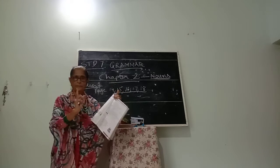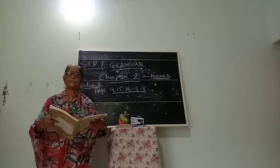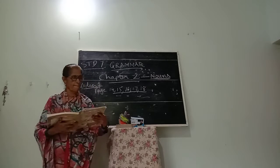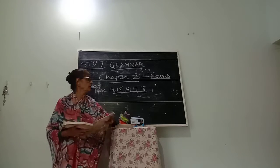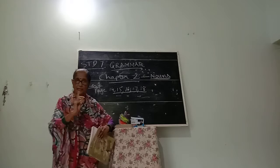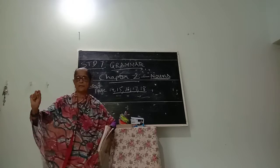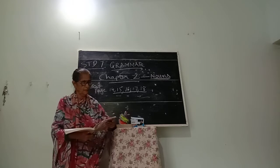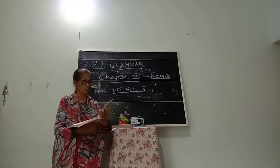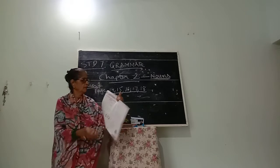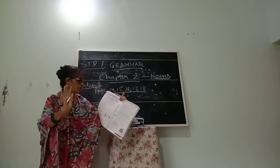So I'm explaining nouns. What is a noun? A noun is the name of a person, place, animal or thing. Nouns can be of five kinds. All of you have to learn. Five kinds of nouns are there.